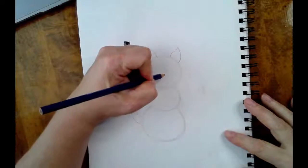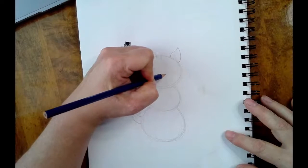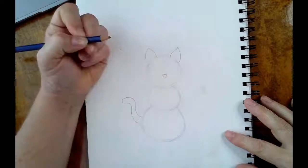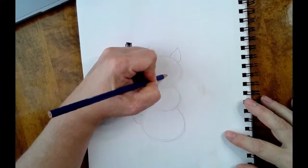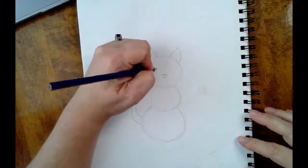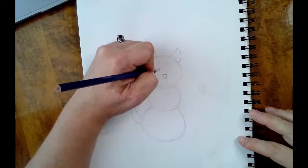Now you're going to give him a little triangle for a nose, just like that. And you can give him some cute little kitty eyes.